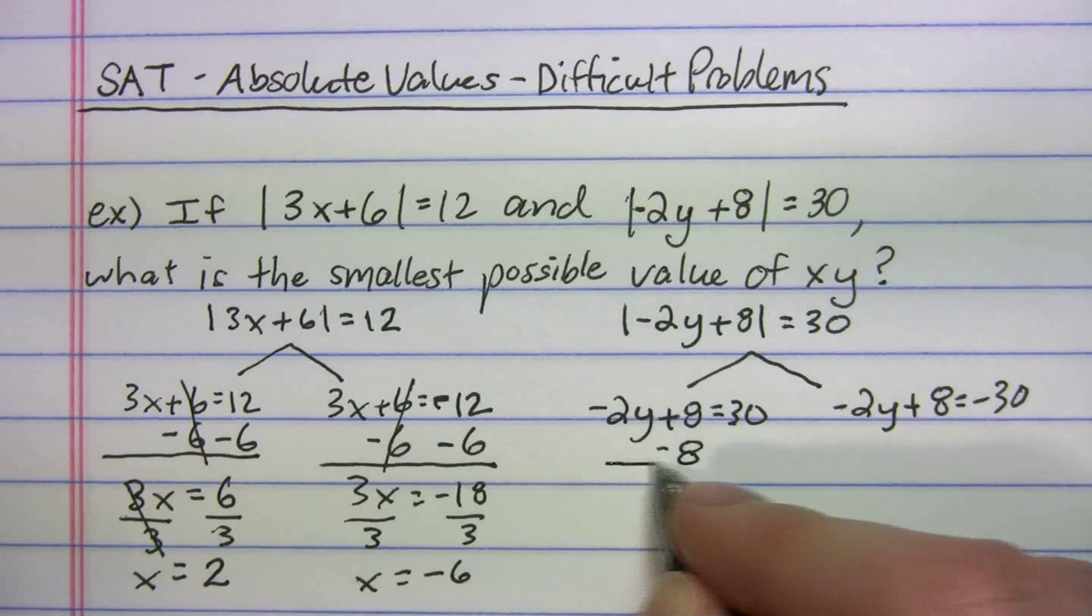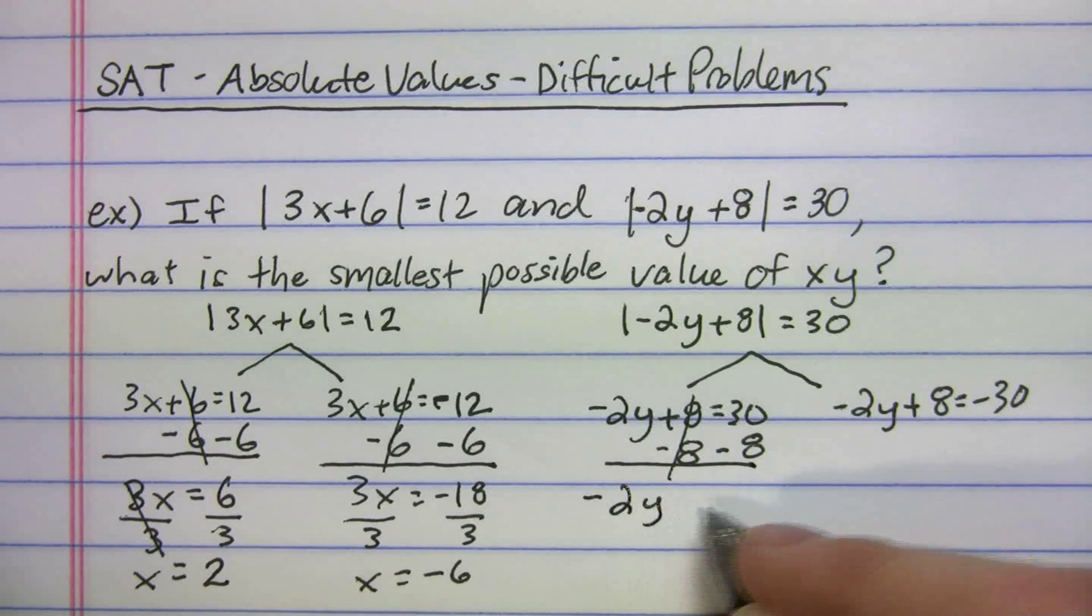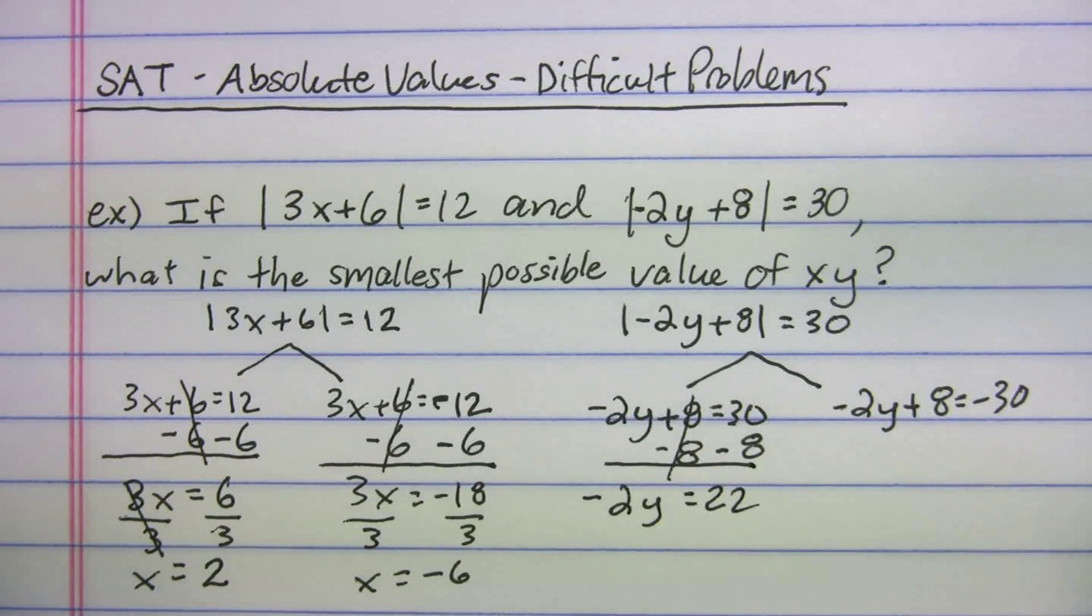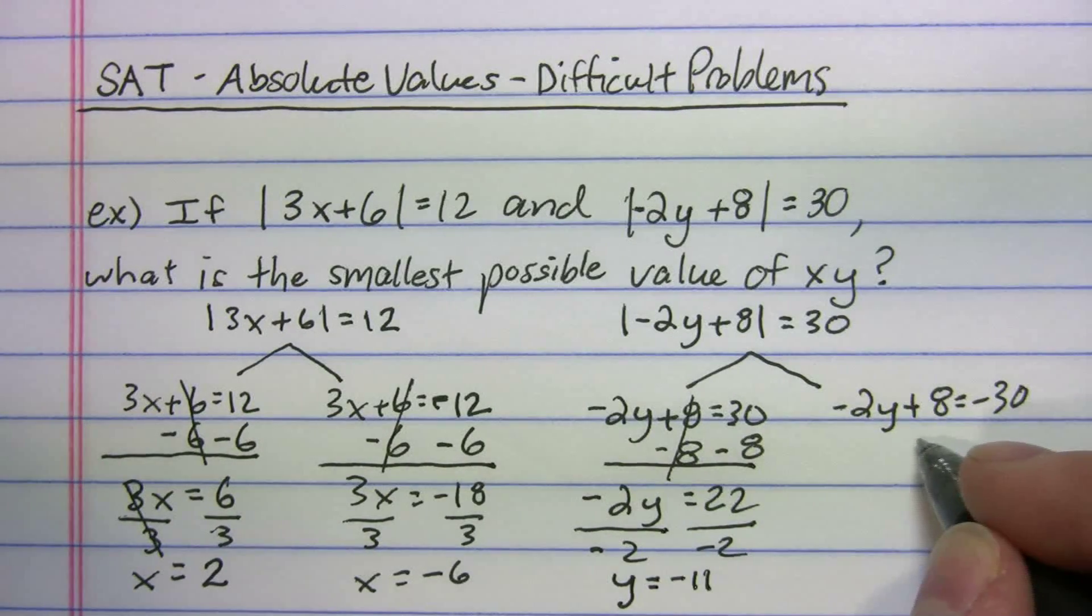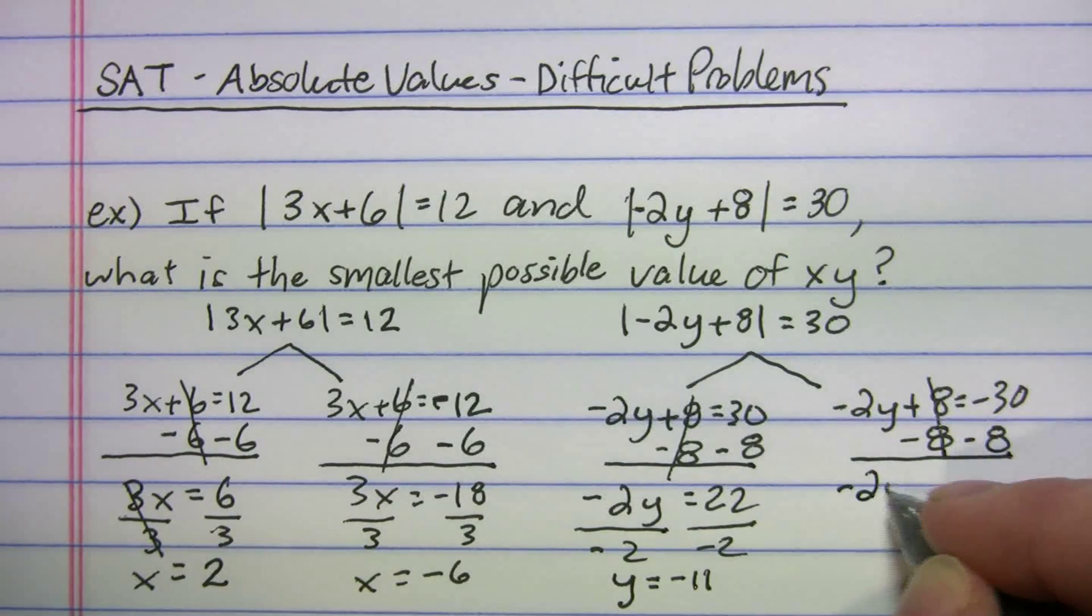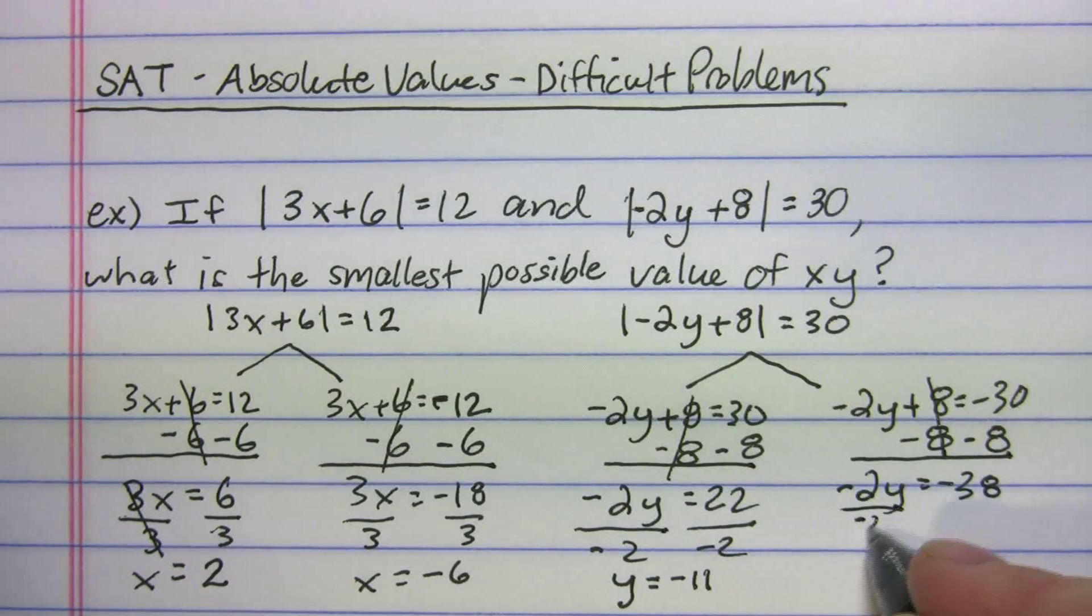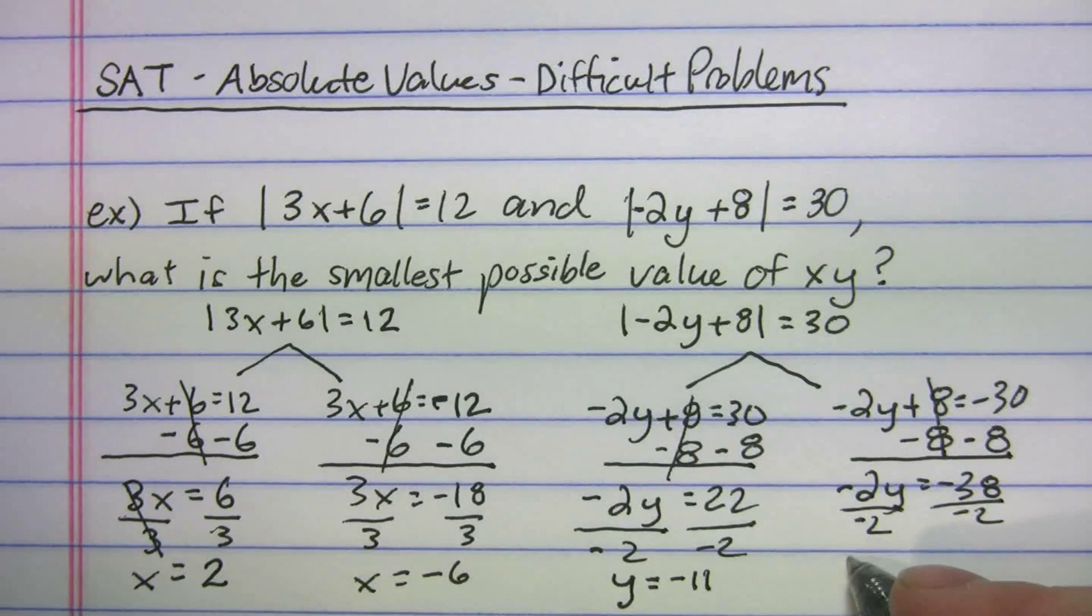We're going to solve for y. So let's minus the 8. We get negative 2y equals 22. We divide by negative 2, and we get y is equal to 19.